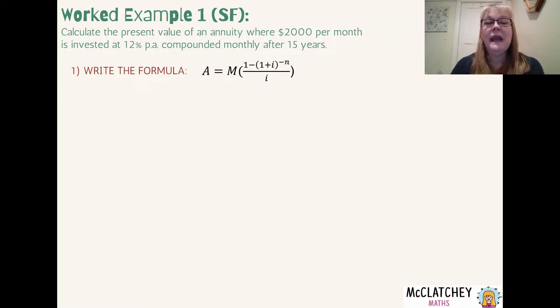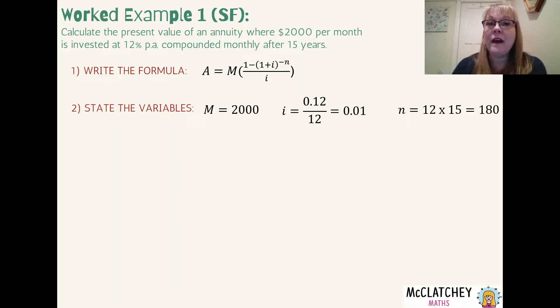So here's our formula right here. Now we're going to need to state our variables. A lot of students just jump straight in, put the variable straight into the question and that can have some complexities if they've forgotten to convert, because often there's marks awarded for showing the calculation where you've converted an annual rate into a monthly compounding rate for example. So firstly let's work out what our variables are. M is our monthly payment and that's worth $2,000. And i is worth 0.01 once we've converted that to a monthly compounding rate. And n is our number of payments altogether which is 12 months in a year times by 15 years altogether gives us 180.